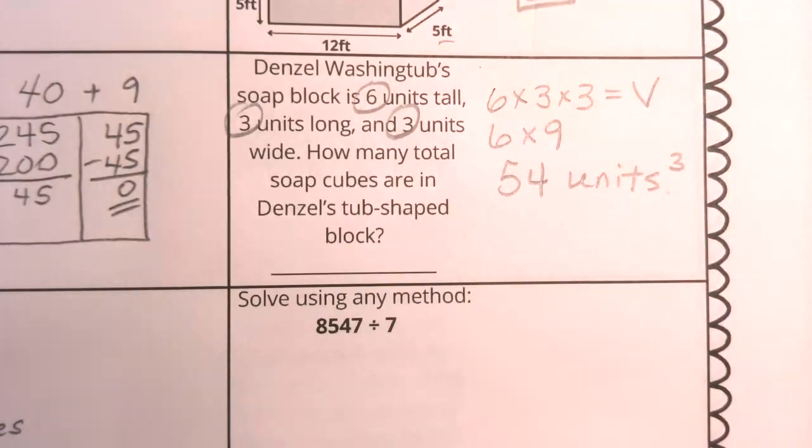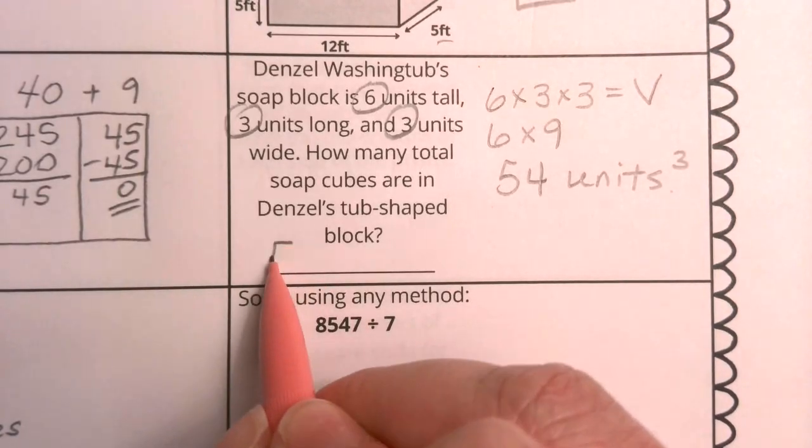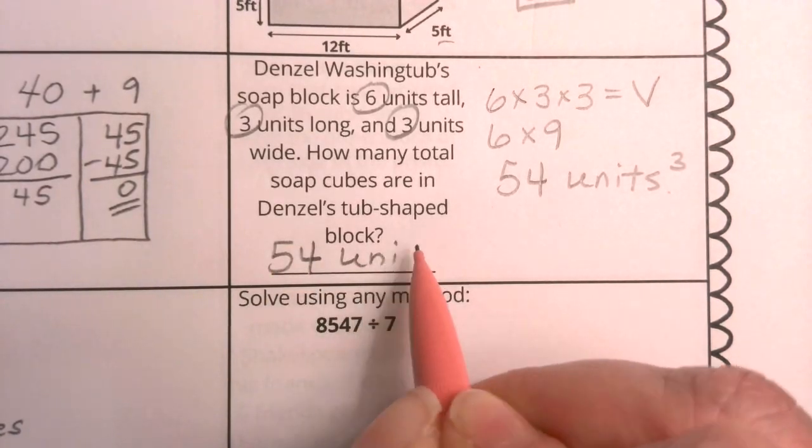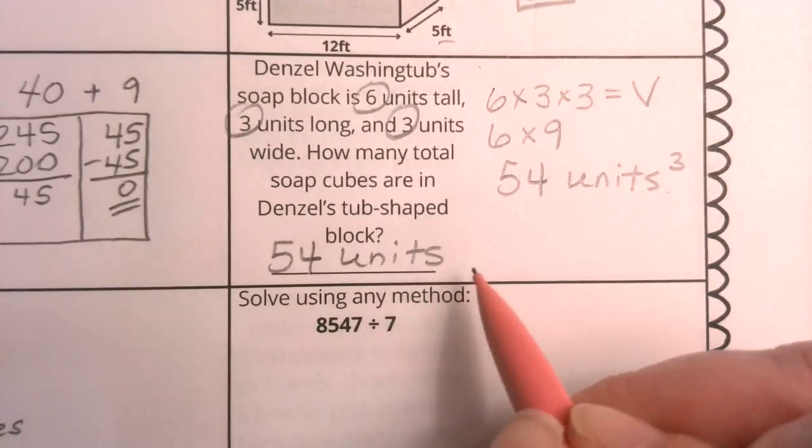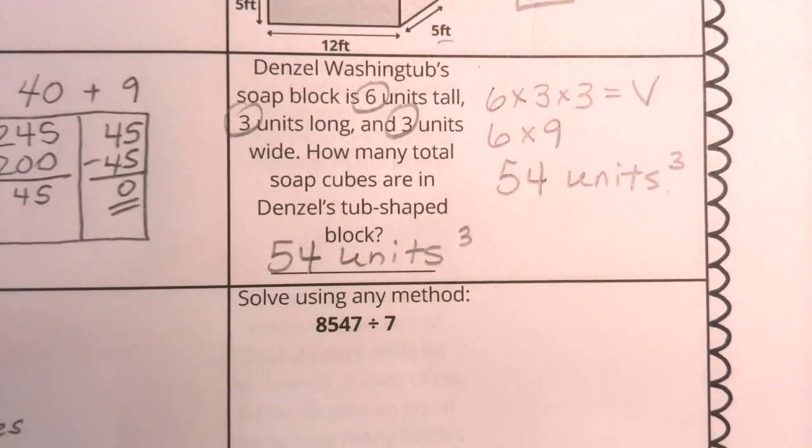They did not tell us the specific unit. When they don't tell you the specific unit, like centimeter, or meter, or inch, we just say unit, but don't forget the tiny 3 to show that that is cubed.